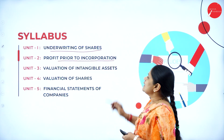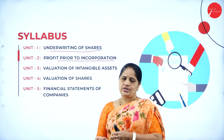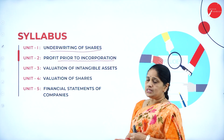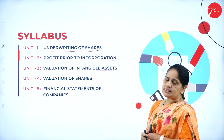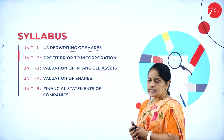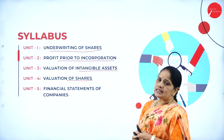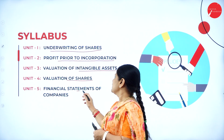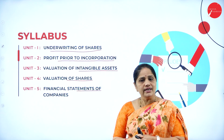Then in the second unit, we will be learning about profit prior to incorporation. What do we mean by incorporation? Incorporation means registration, or getting the company incorporated — converting it into a joint stock company. Then in Unit 3, we will be having a valuation of intangible assets. Those assets which cannot be touched and felt, we call them intangible assets. Then we have the valuation of shares in Unit 4 — what is a share, the different types of shares, how do you value the share. And in Unit 5, the financial statements of companies.